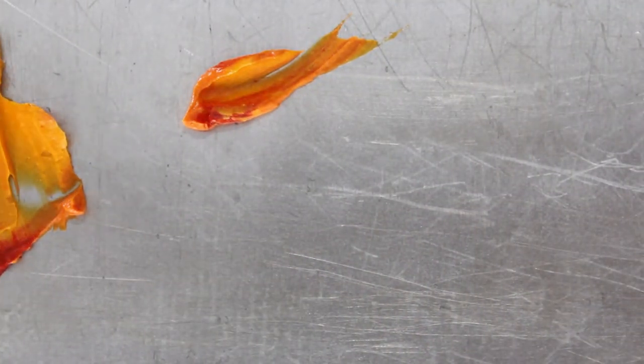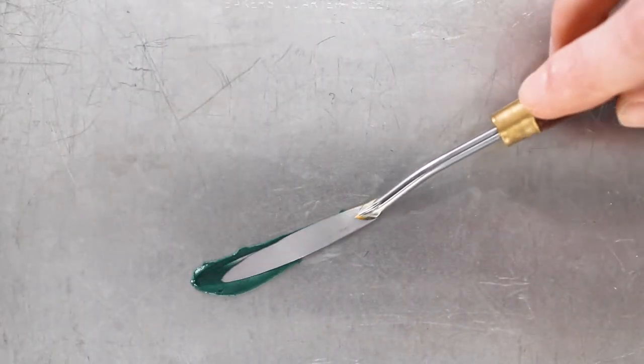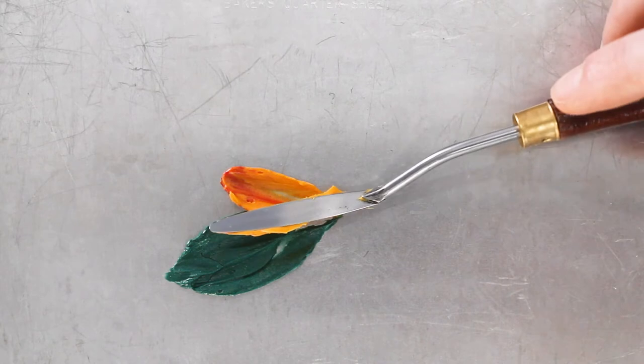So now let's put all those techniques together to make our sunflower. I'll start off with two strokes for my leaf.